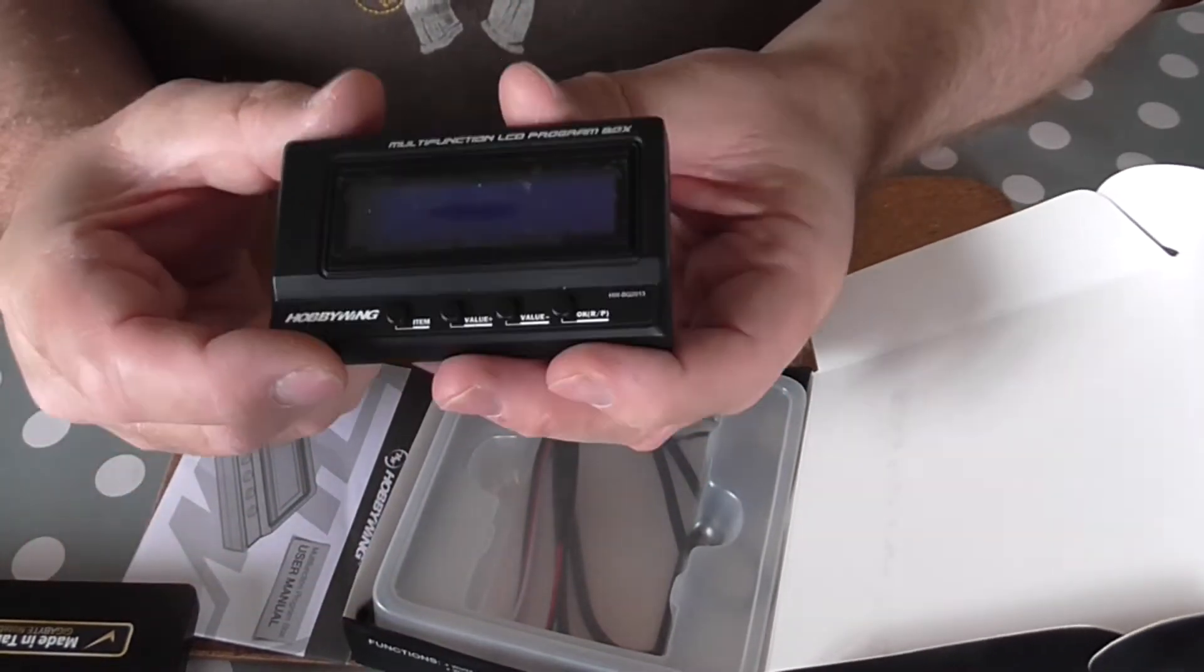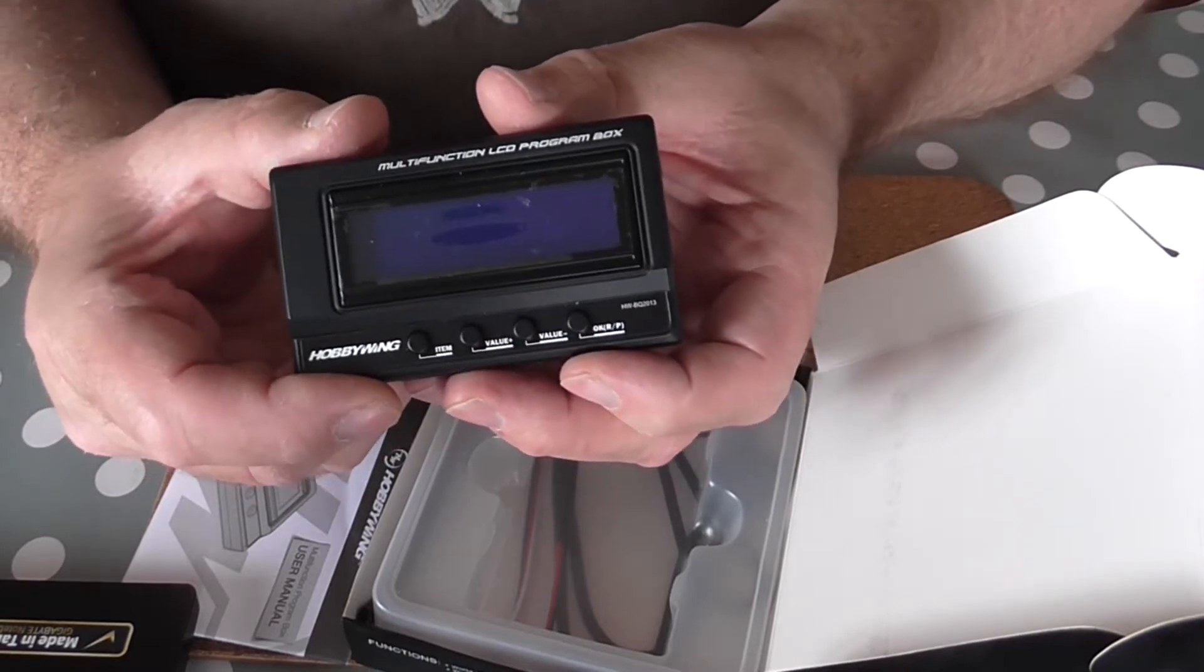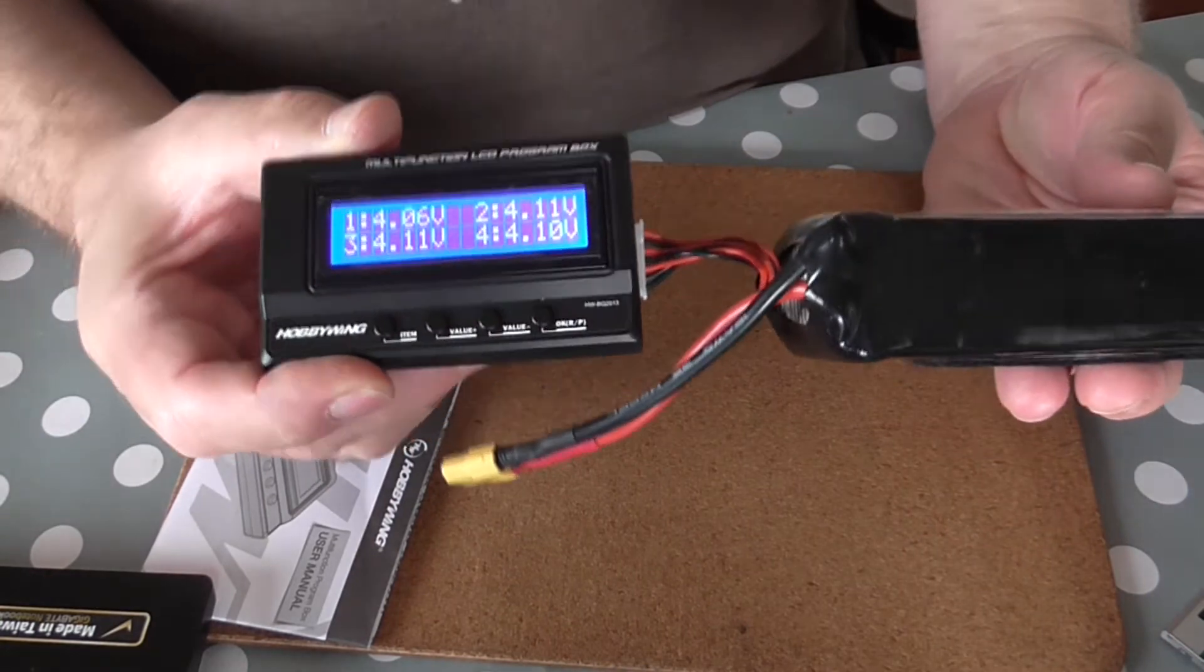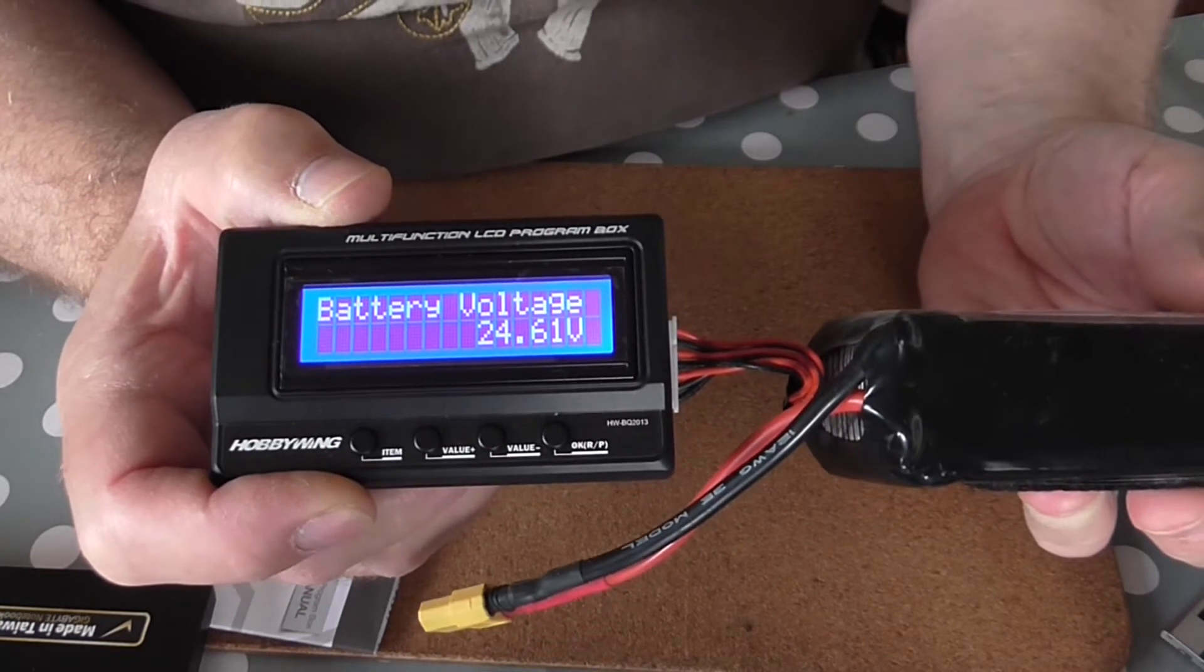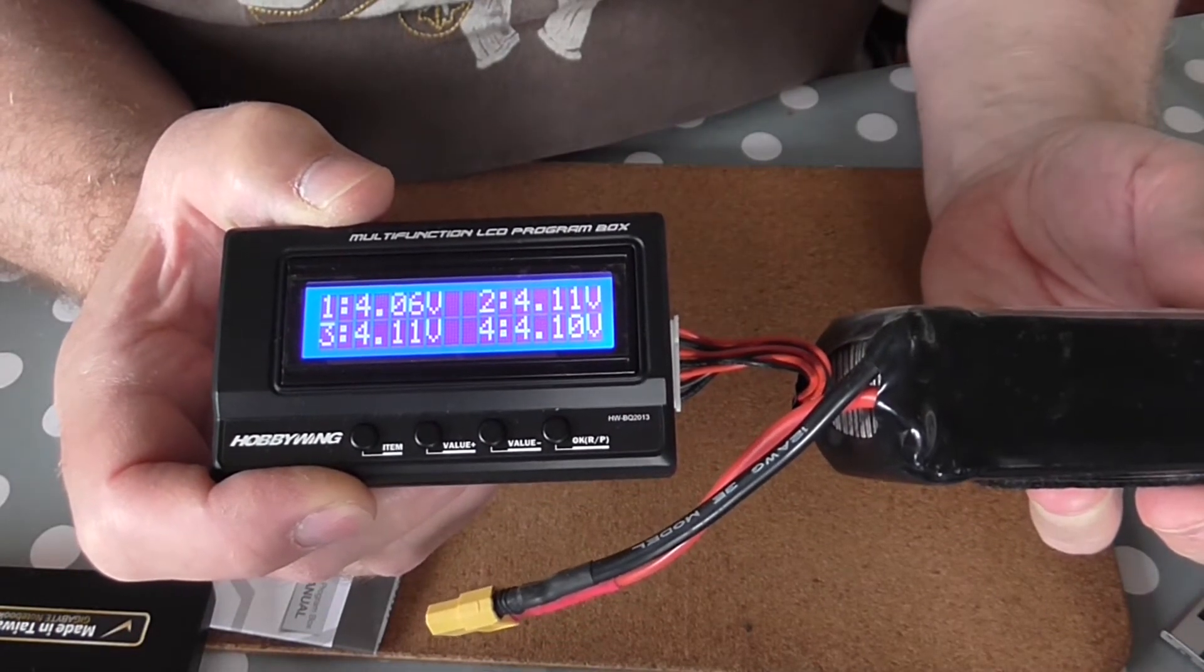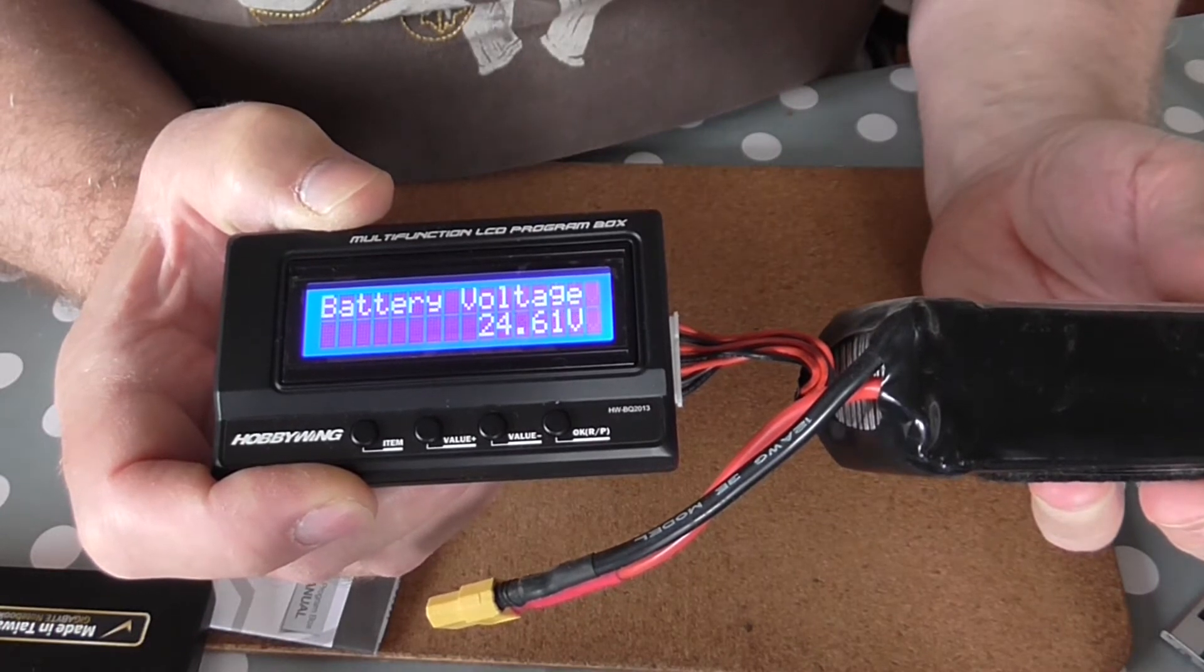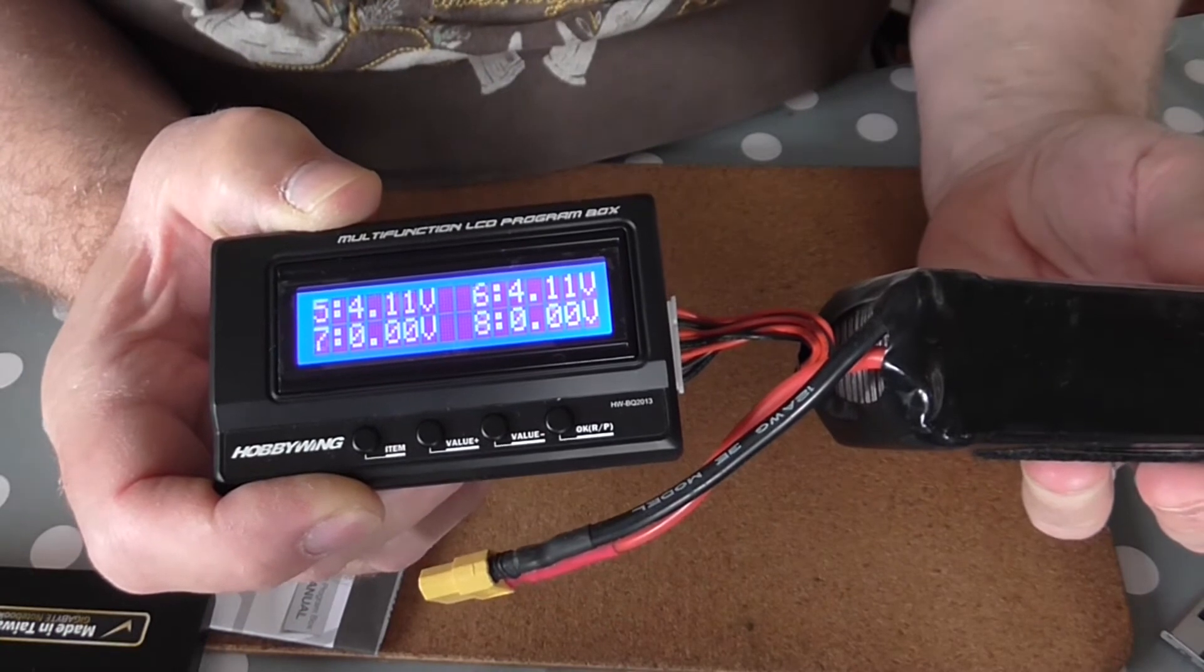A neat little piece of kit. I'll plug the battery in and show you how it looks just for the balance part. Here we go. Got a 6S battery plugged in. Hopefully you can see it on the screen. And it runs through its total voltage and then the voltage for each cell. So it just scrolls through the voltage on each cell.